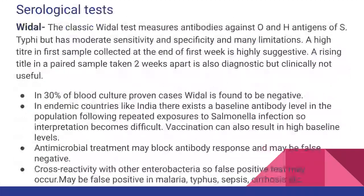The most commonly done serological test is the Widal test, though it has only moderate sensitivity and specificity with many limitations. It measures antibodies against the O and H antigens of S. typhi, but these antigens are also present in many other enterobacteria, causing high chances of false positive results. A high titer in the first sample at the end of the first week is highly suggestive; a rising titer in a paired sample is even more diagnostic, but requiring a two-week gap between samples makes it clinically impractical.